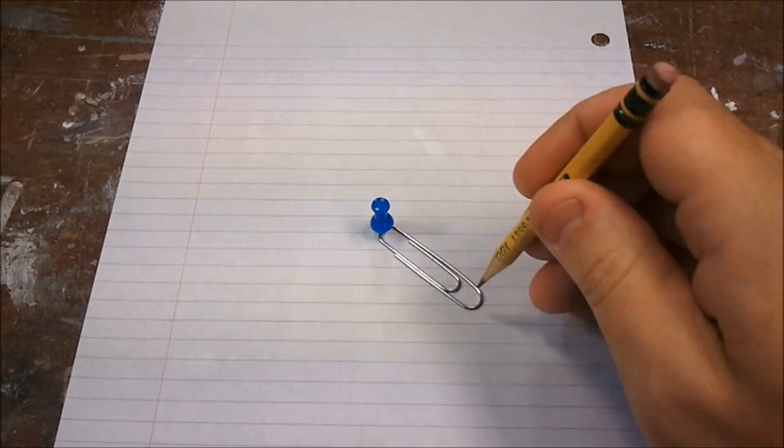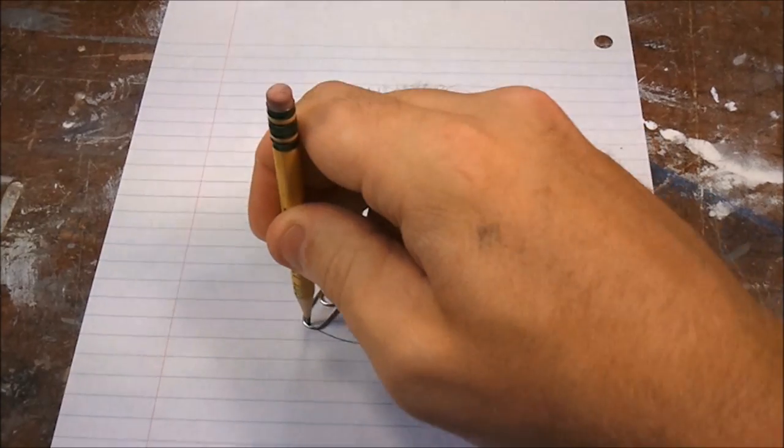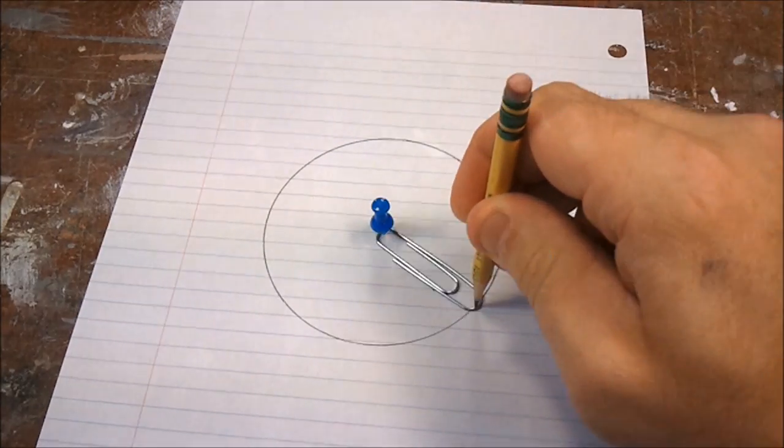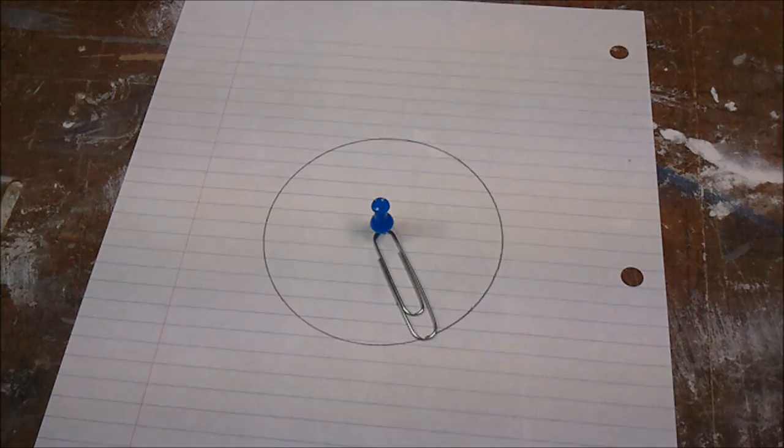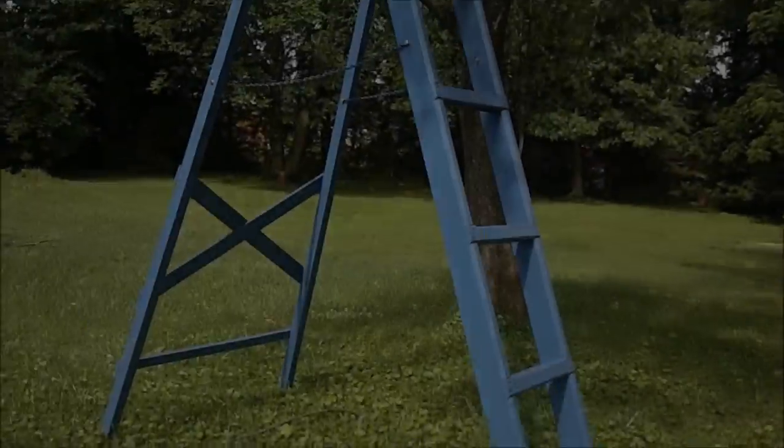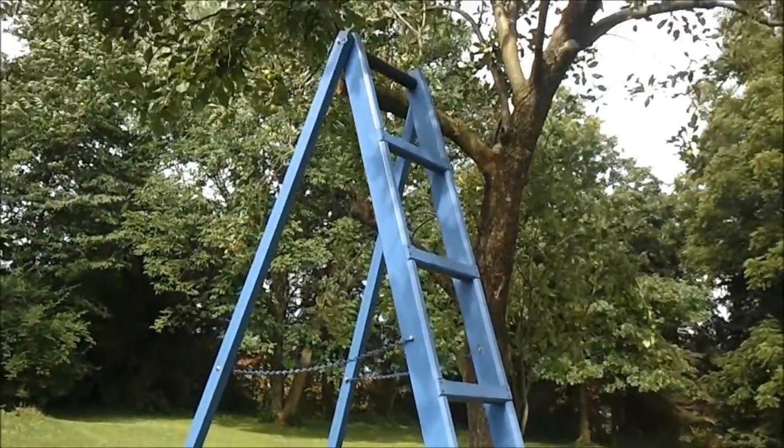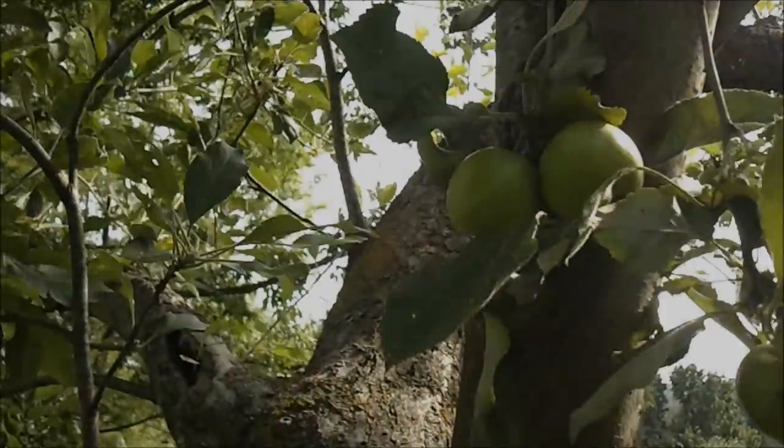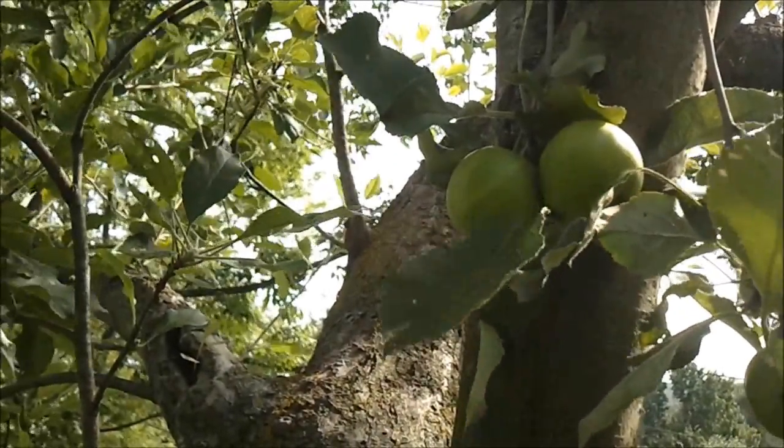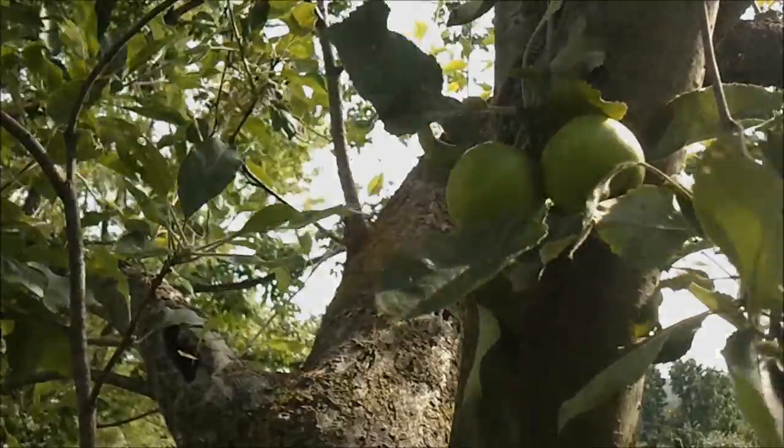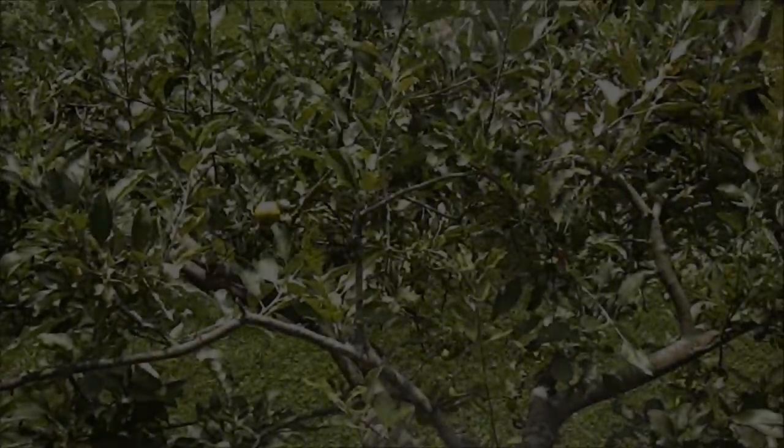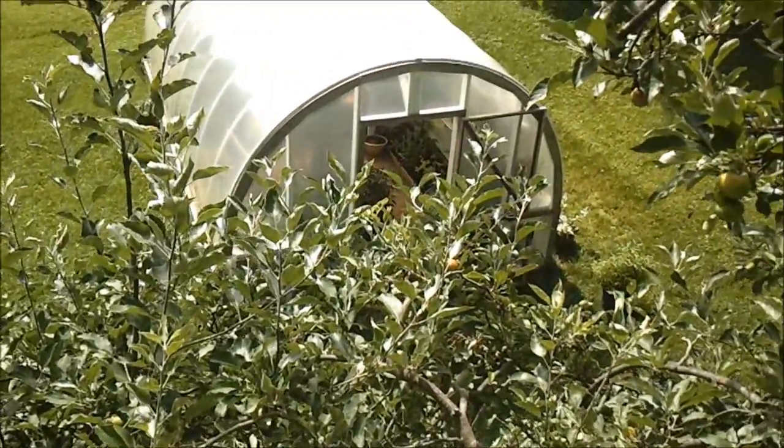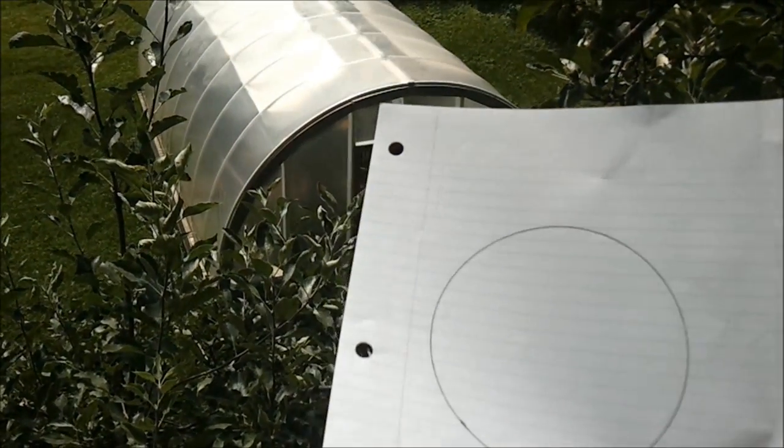The definition of a circle is the set of all points equidistant from a specific point. All of these points are one paperclip away from the pen. Of course, all of these points in three-dimensional space would really be the definition for a sphere, so let's further restrict the definition. A circle is the set of all possible points on a two-dimensional plane whose distances are equal to a specific point.